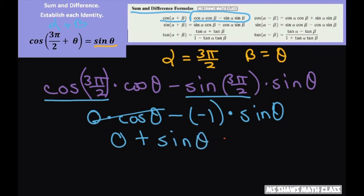So that's going to equal 0, and that's going to be plus sine of theta. So we established our identity by using our sum and difference formulas.